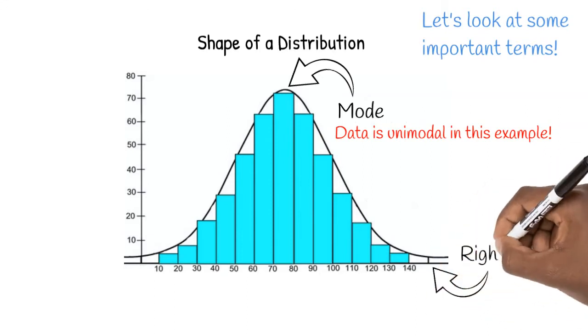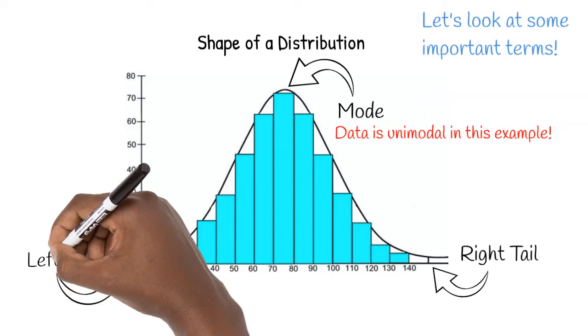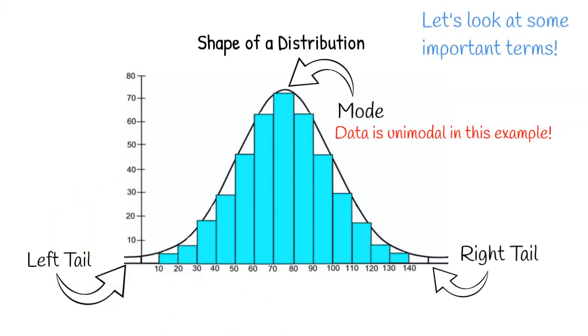The ends of our data, where the lowest and highest values in our data set fall, are called our tails. On the right side is our right tail, and on the left side is our left tail.